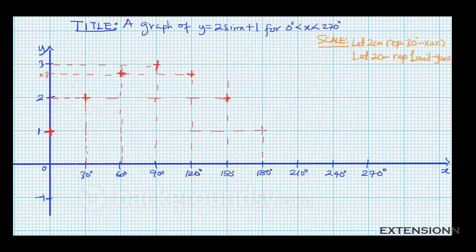When x is 210, y is 0 — mark that point. When x is 240, y is minus 0.7, so go 7 small boxes down from 0. When x is 270, y is minus 1 — mark that point. Now we have all points on the graph paper, so let's draw a smooth curve through them.